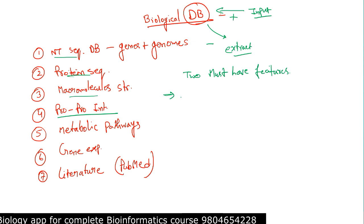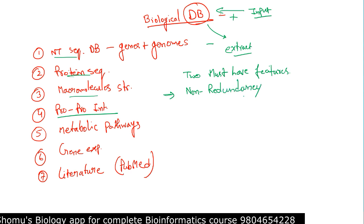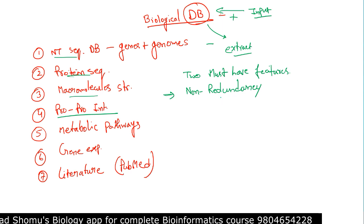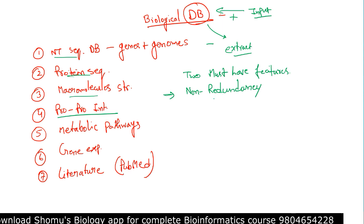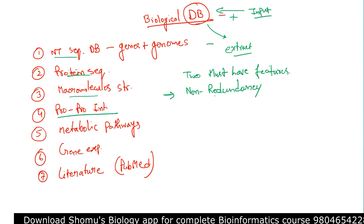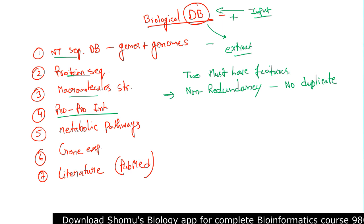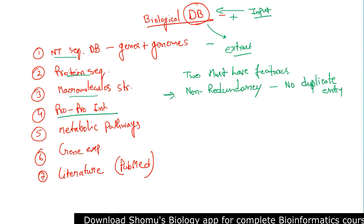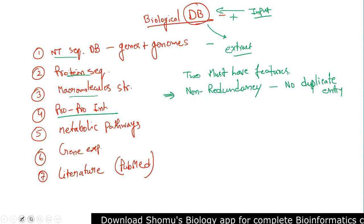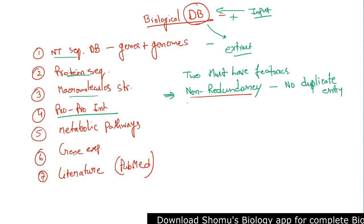There are two must-have features needed for a biological database. The first is non-redundancy. There should not be any redundancy, or if there is, the value is very low. Whenever we put something into the database, it should occur only once — no duplicate entries. We try to minimize redundancy as low as possible, aiming for near non-redundancy.